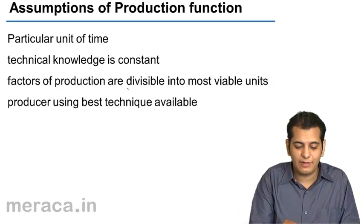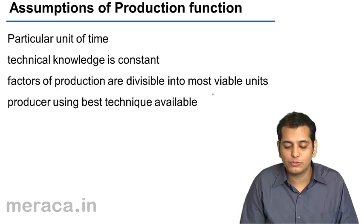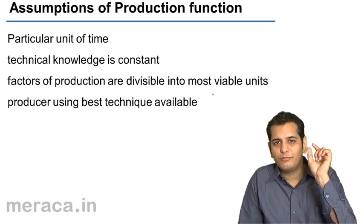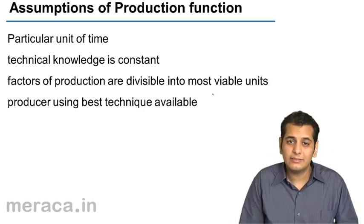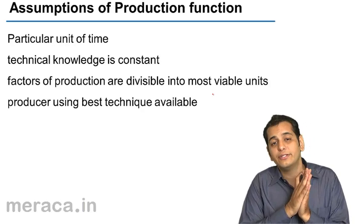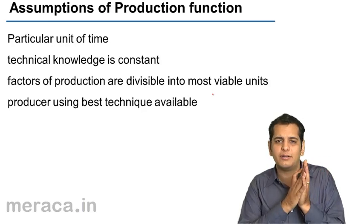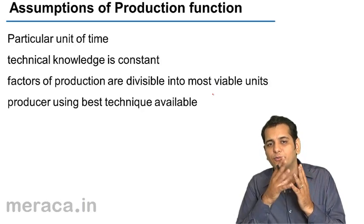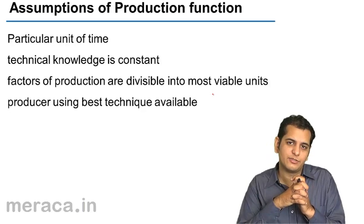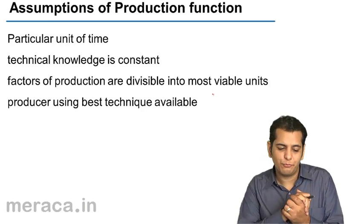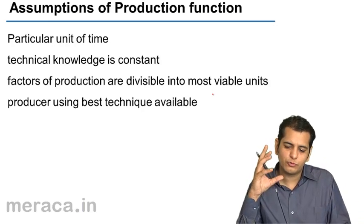The next assumption is that factors of production are divisible into the most viable units. The factors of production can be divided in such a way that the requirement of each can be met. For example, if I require 87 labors, I can recruit exactly 87 labors — I don't have to recruit in lots of 100 or 10. So factors of production are divisible in the most viable units.